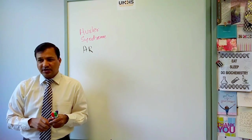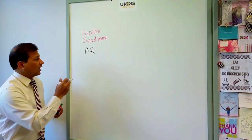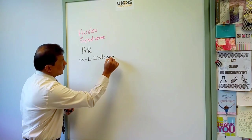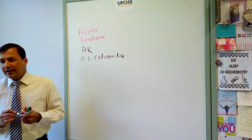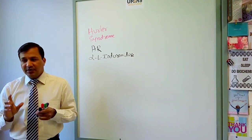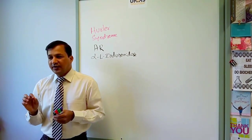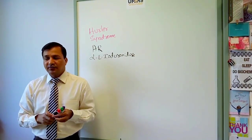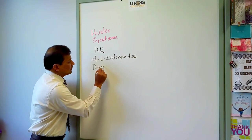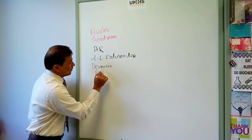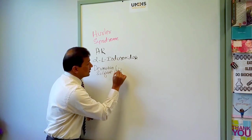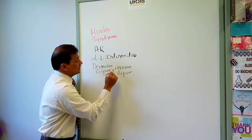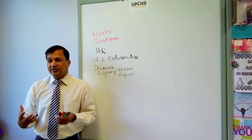The enzyme deficient in Hurler syndrome is alpha-L-iduronidase. This enzyme is involved in the degradation of dermatan sulfate and heparan sulfate. There will be partial degradation of glycosaminoglycans, and dermatan sulfate and heparan sulfate will be excreted in the urine.